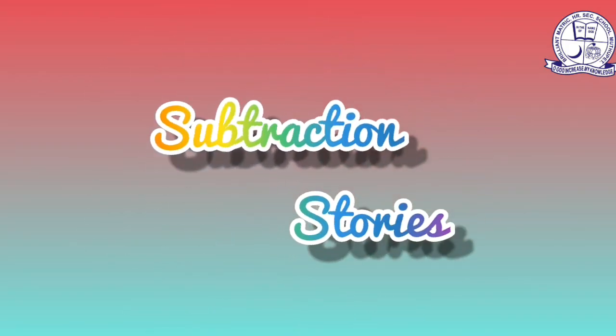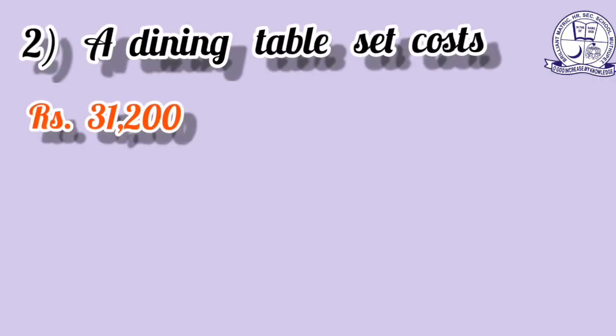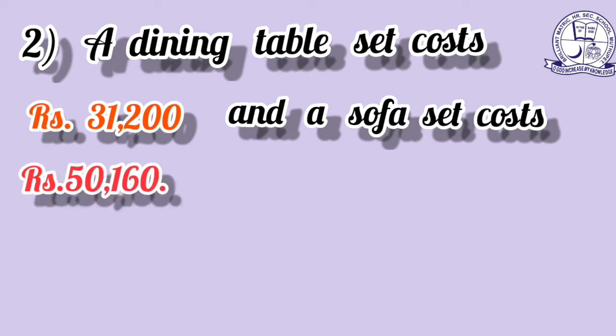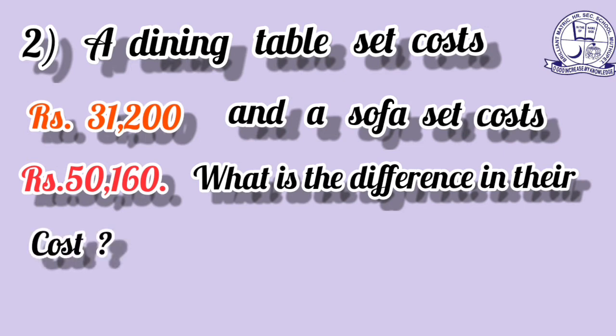Next is a subtraction story problem. A dining table set costs 31,200 rupees and a sofa set costs 50,160 rupees. What is the difference in their cost? To find the difference, we subtract. Write the bigger number 50,160 on top and the smaller number 31,200 below it.